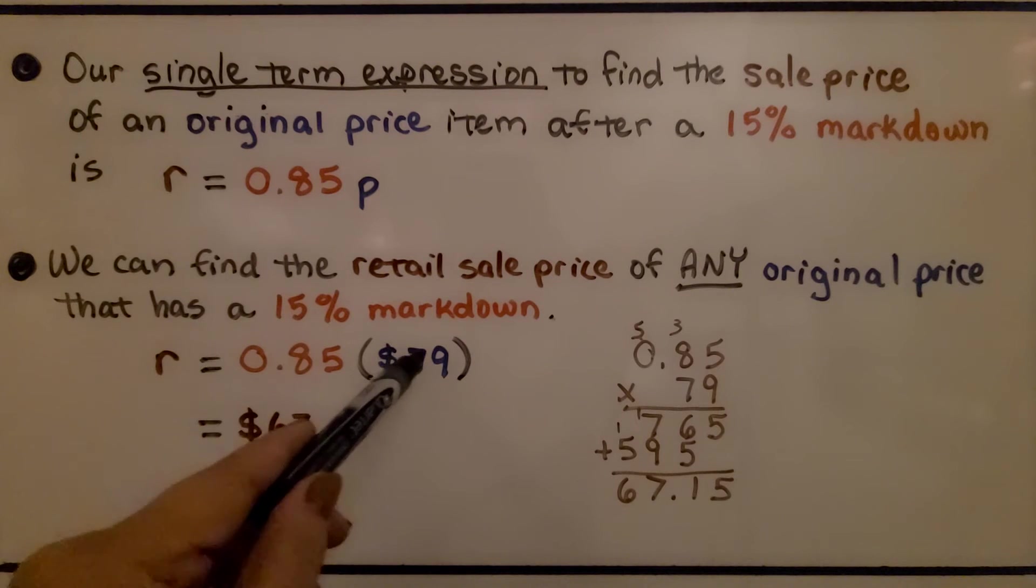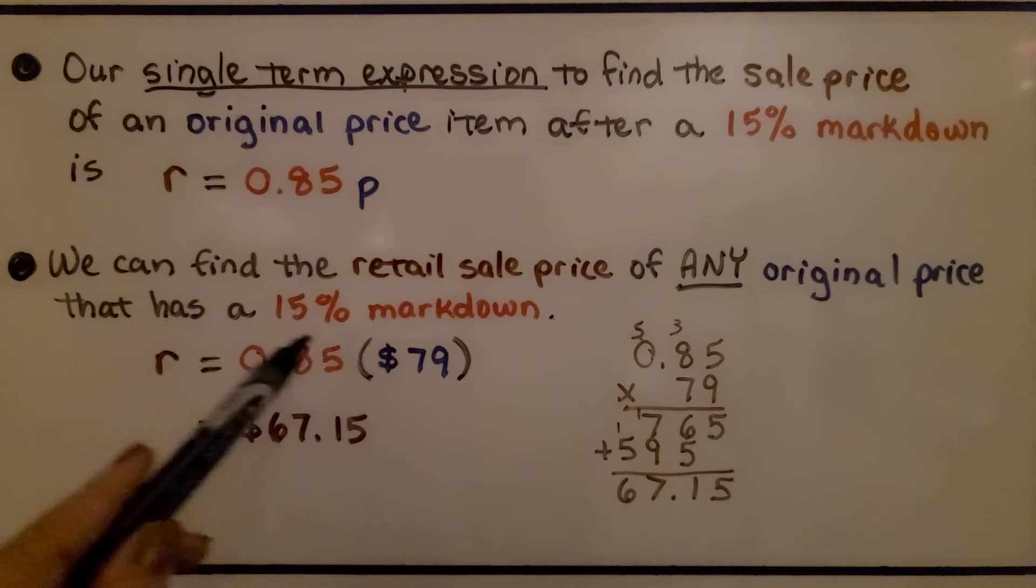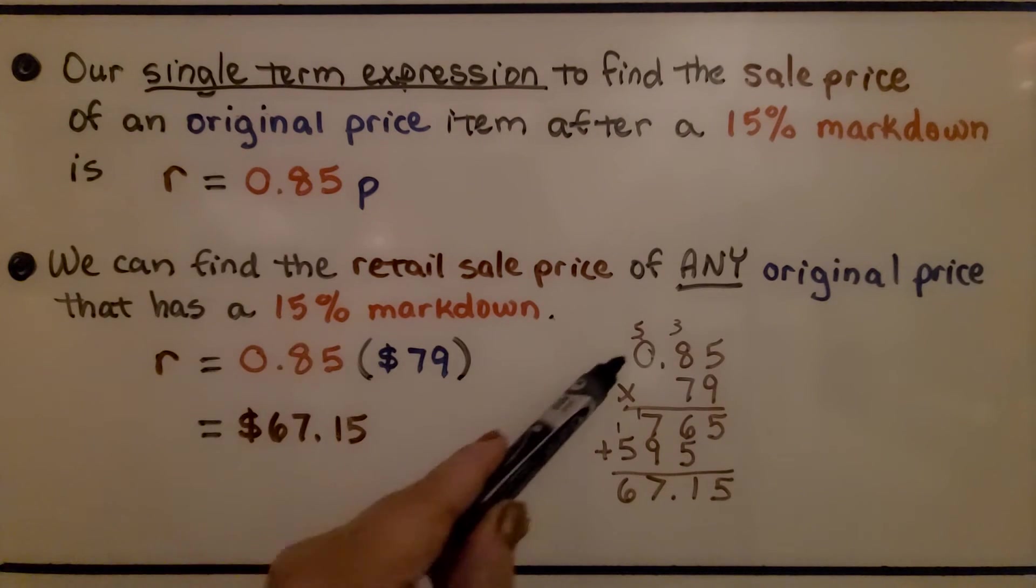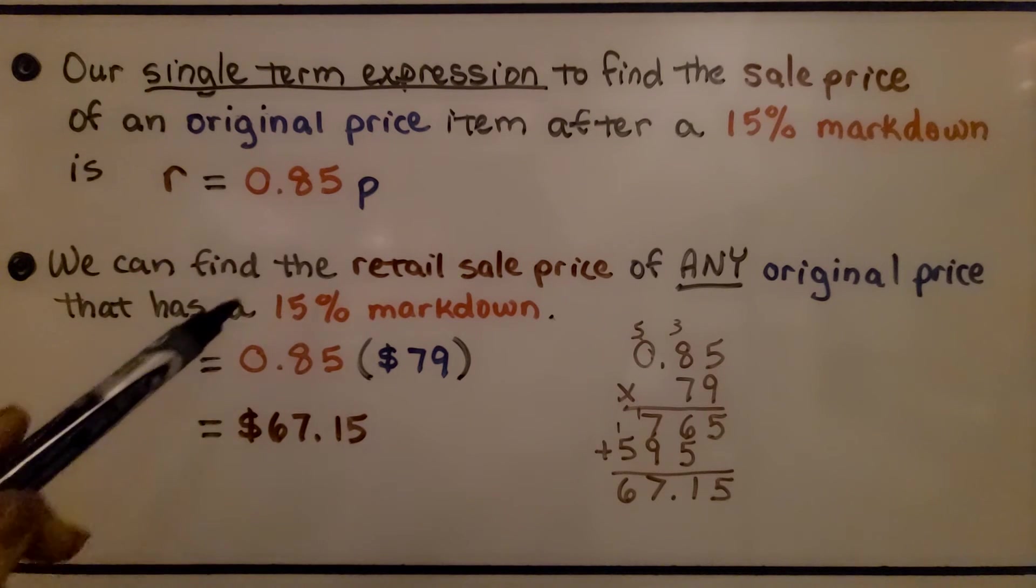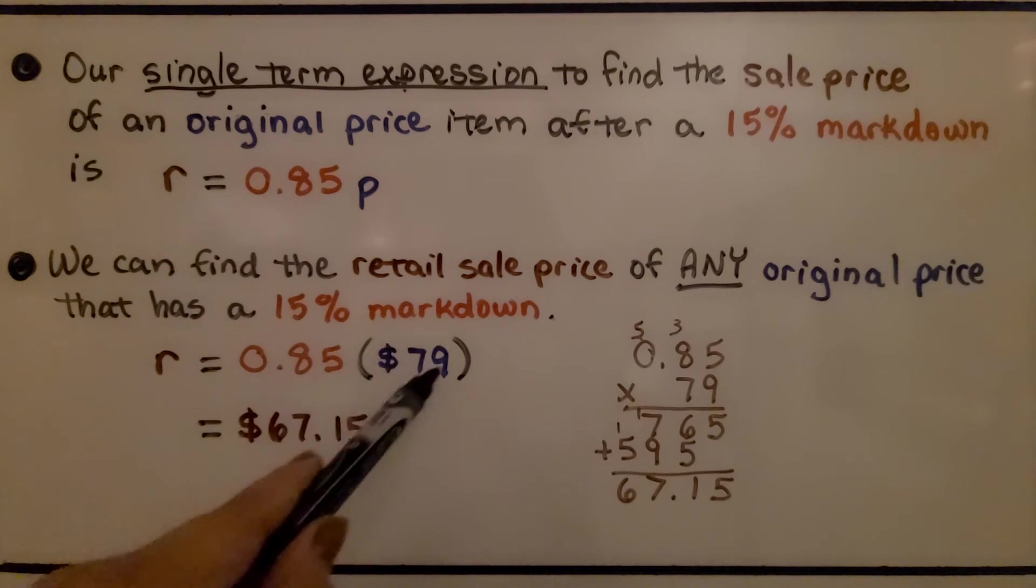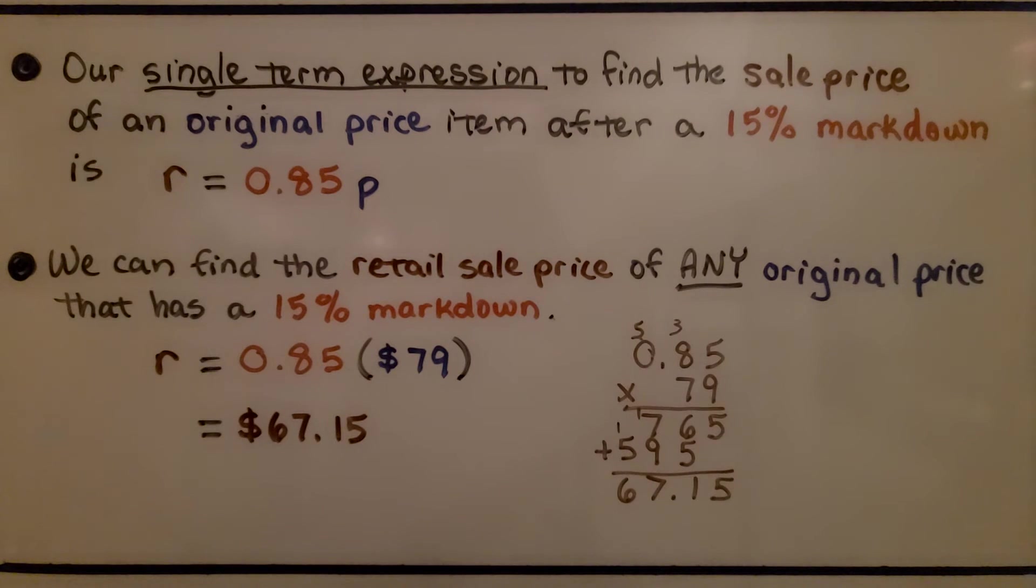So if we have something that's $79, we can multiply $79 times the 0.85, and we can see after a 15% markdown, it would be $67.15. For a 15% markdown, we could put any original price in here and find the markdown sale price.